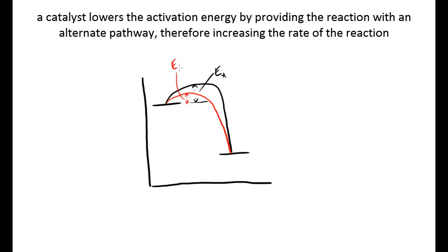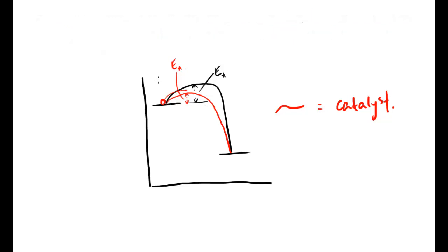When we apply a catalyst, we still start at the same point and end at the same point, but we now have a lower hump — a lower activation energy. That has been achieved by providing an alternate pathway. Going back to the ball analogy, the ball now only needs to be lifted to a lower point before it rolls down, so it requires less energy to get there. Therefore the collision is more likely to be successful because the activation energy is lower, and when two particles collide it's more likely that they will successfully react.